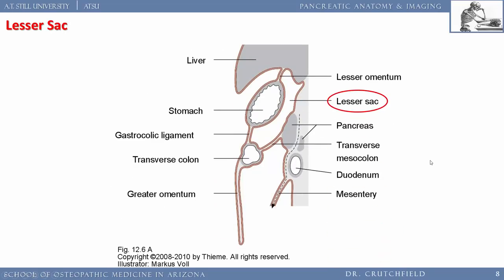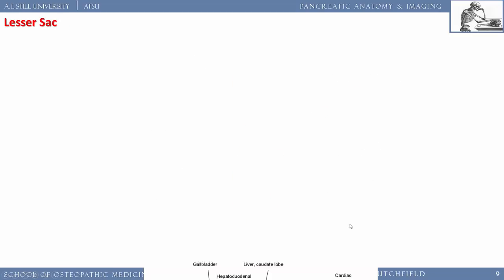From a lateral view, you divide the gastrocolic ligament above the transverse colon to enter the lesser sac where the pancreas is located. The lesser omentum is situated superiorly. The lesser sac lies anterior to the pancreas. Here, with the stomach removed, we see the pancreas, the transverse colon, and the area that would normally be the lesser sac.